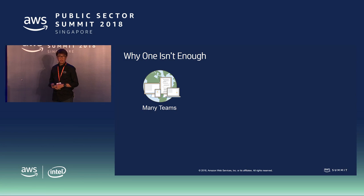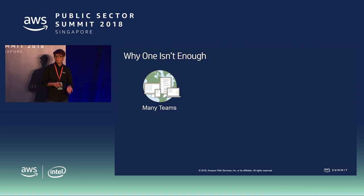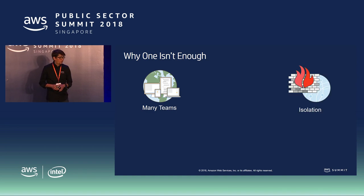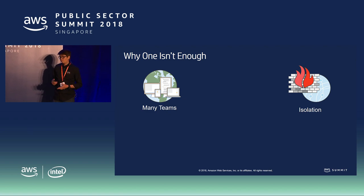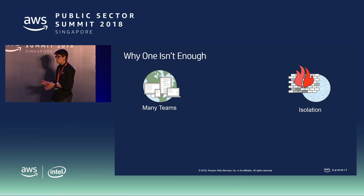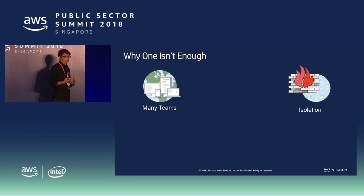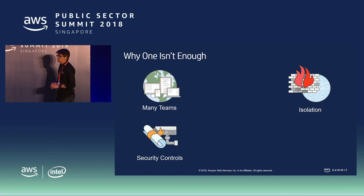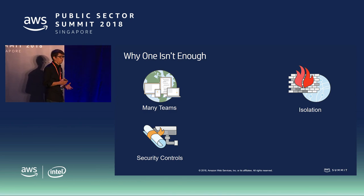Why isn't one account enough? You have many teams working on that particular account, with different permissions. Different workloads might need different isolation based on data classification — for example, a more sensitive workload needs to be isolated differently from a website. It's a very different security posture for different workloads. And you also need to manage security controls so one team can't mess up another team's workloads in a particular VPC.